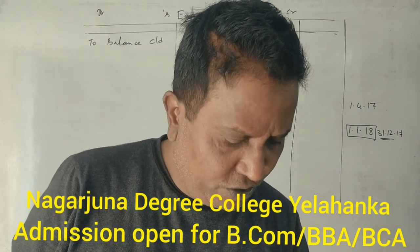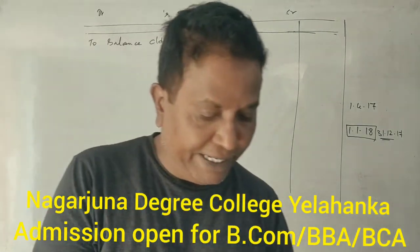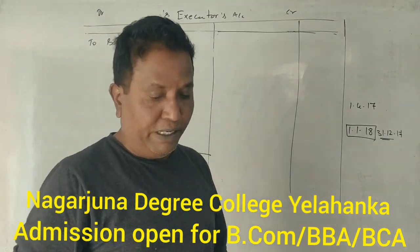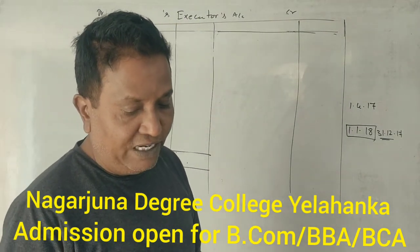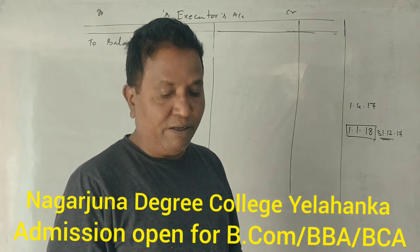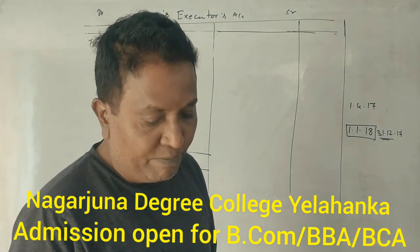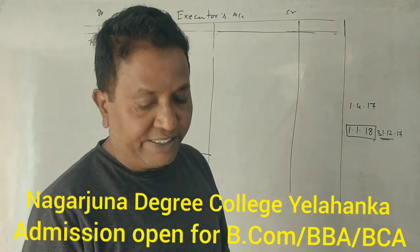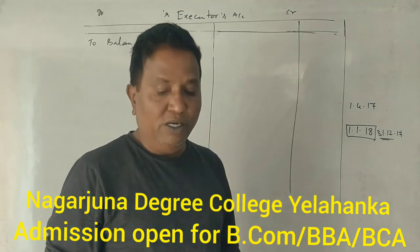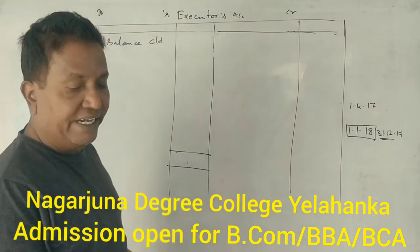The partnership terms include: interest on capital at 10% per annum, salary to Y of 2,000 per month, Y's share of goodwill, and Y's share of profit up to the date of death based on the previous year's profit. Total goodwill of the firm is 54,000. Profit of the firm for the year 2016-17 is 30,000.